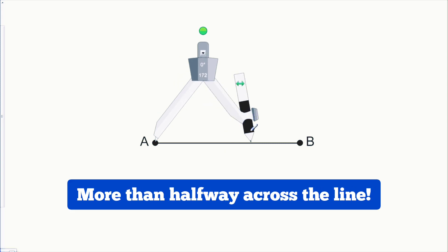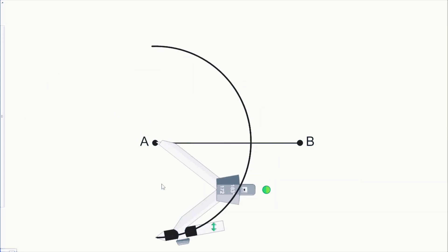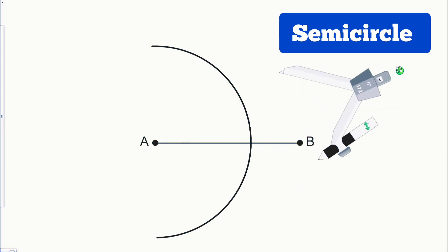The next thing you want to do is swing the compass and create a massive arc. Ideally, a semicircle, just like this.